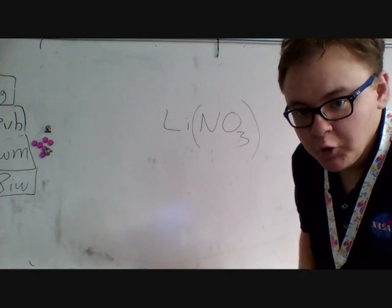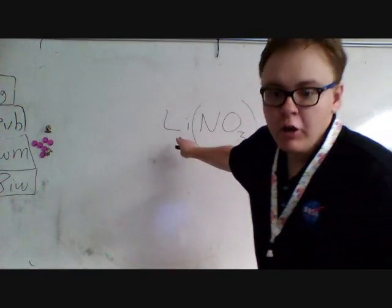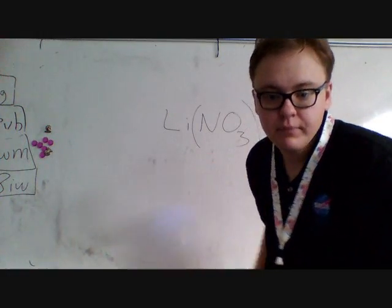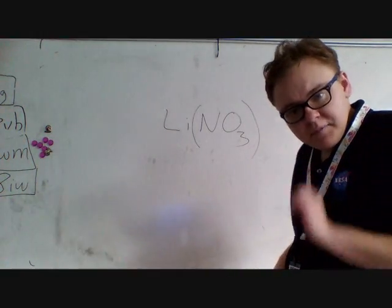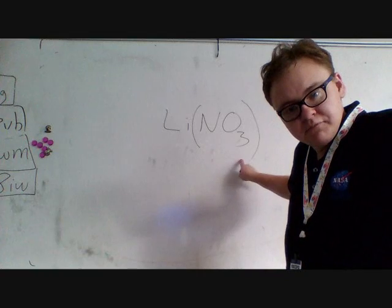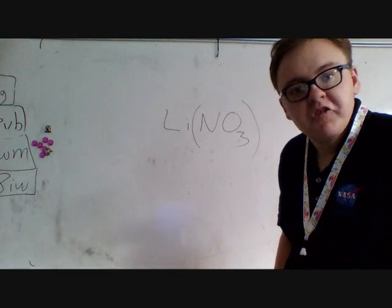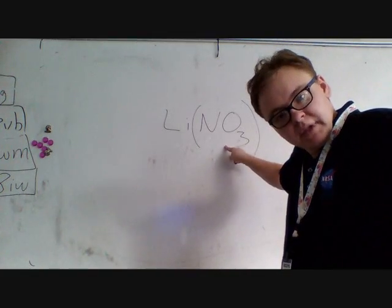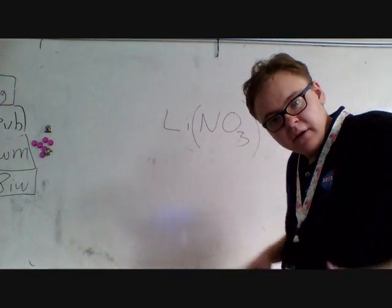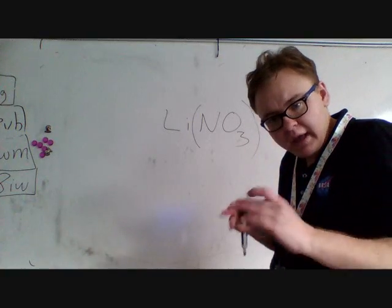Sometimes you'll get a molecule with some parentheses in it. You can see it on my lithium nitrite. Sometimes we'll see parentheses around part of our molecule. These are called polyatomic ions. NO3 acts in a special way. It's grouped together. It acts like it's one atom.